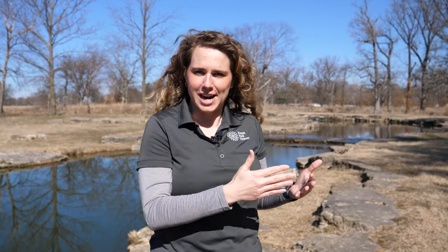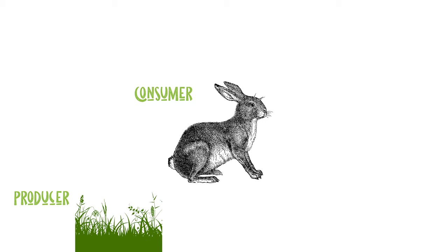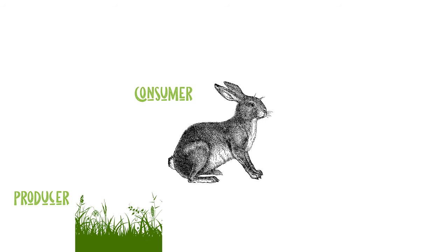We have the grass, which is a primary producer; we have the rabbit, a primary consumer; and then we have the hawk, a predator.